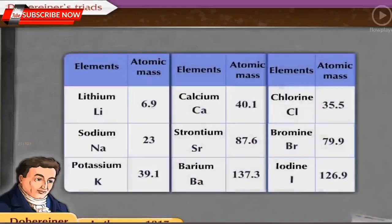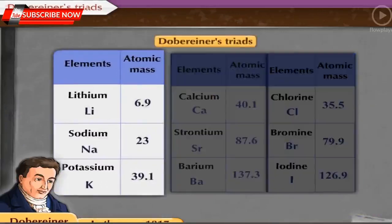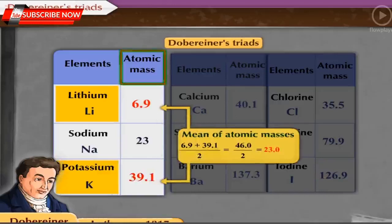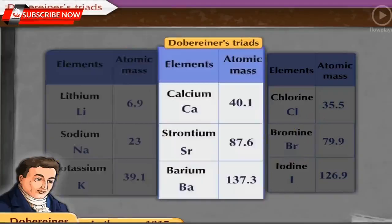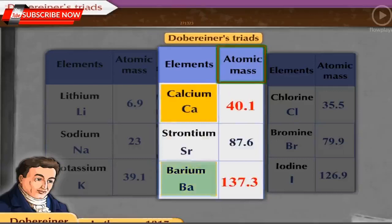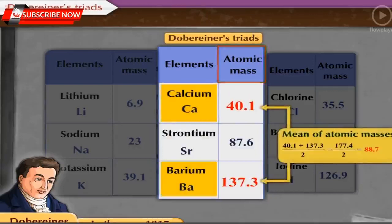Let us study some examples of Dobereiner's Triads. The elements lithium, sodium and potassium form a triad. The atomic mass of lithium is 6.9 and that of potassium is 39.1. The mean of their atomic masses is equal to the atomic mass of sodium, which is 23. The elements calcium, strontium and barium form a triad. The atomic mass of calcium is 40.1 and the atomic mass of barium is 137.3. The mean of their atomic masses is 88.7, which is equal to the atomic mass of strontium, which is 87.6.